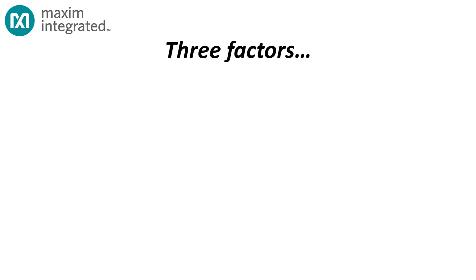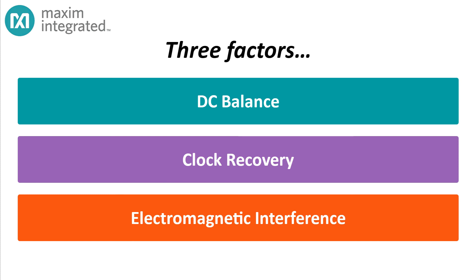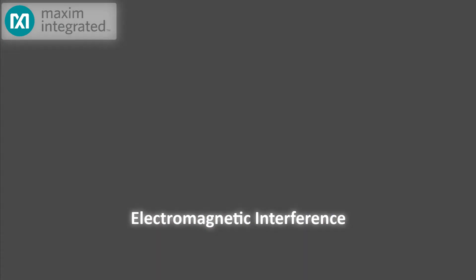So far, we've addressed two out of our three concerns, transition density so that we can reliably recover the clock, and zero disparities so that the signal can be sent over an AC-coupled transmission line. But what about the third concern, electromagnetic interference? Well, the good news is that scrambling and coding have a profound effect on EMI, and Maxim has the test results to prove it. Dim the lights, and we'll see how that looks.